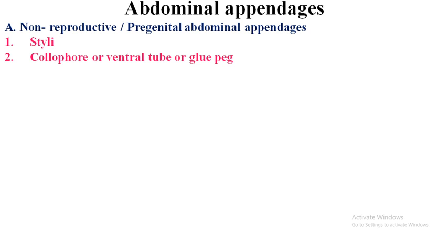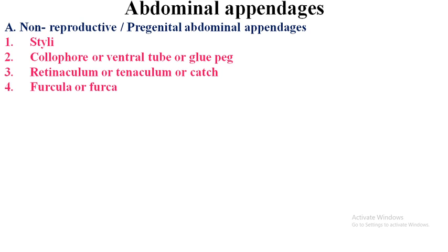These appendages are categorized into three types. First, non-reproductive or pregenital abdominal appendages, which include: first, the styli; second, the colophore, also called the ventral tube or glue peg; third, the retinaculum, tenaculum, or catch; fourth, the furcula or furca.